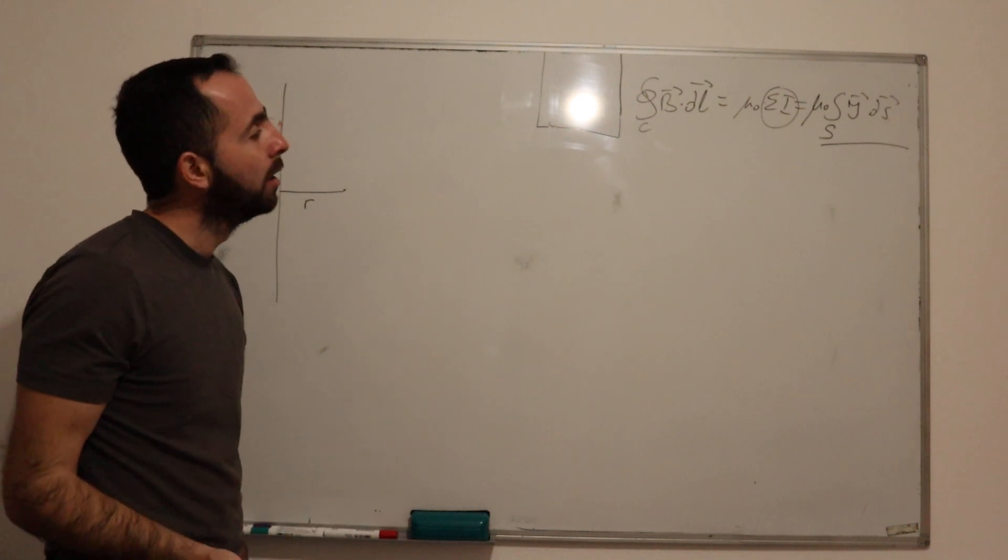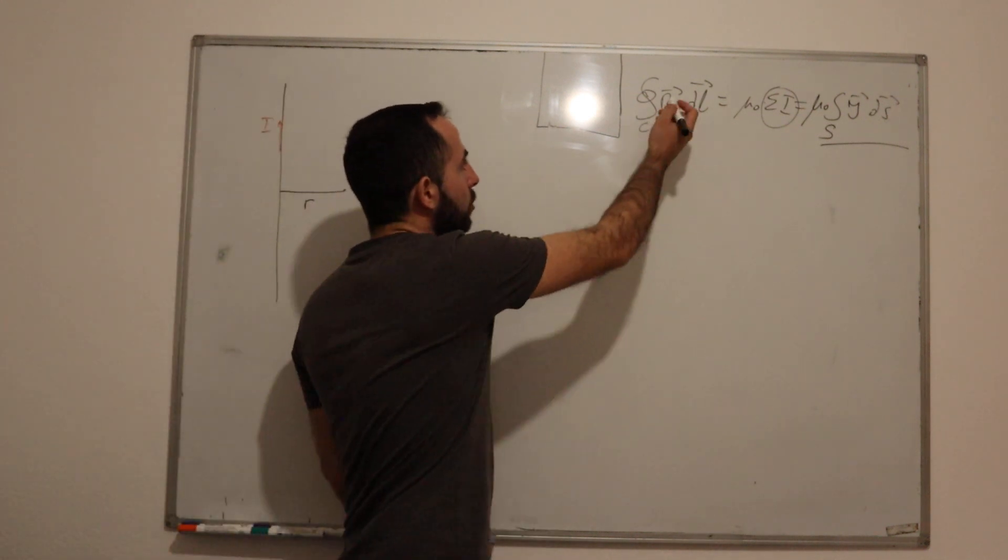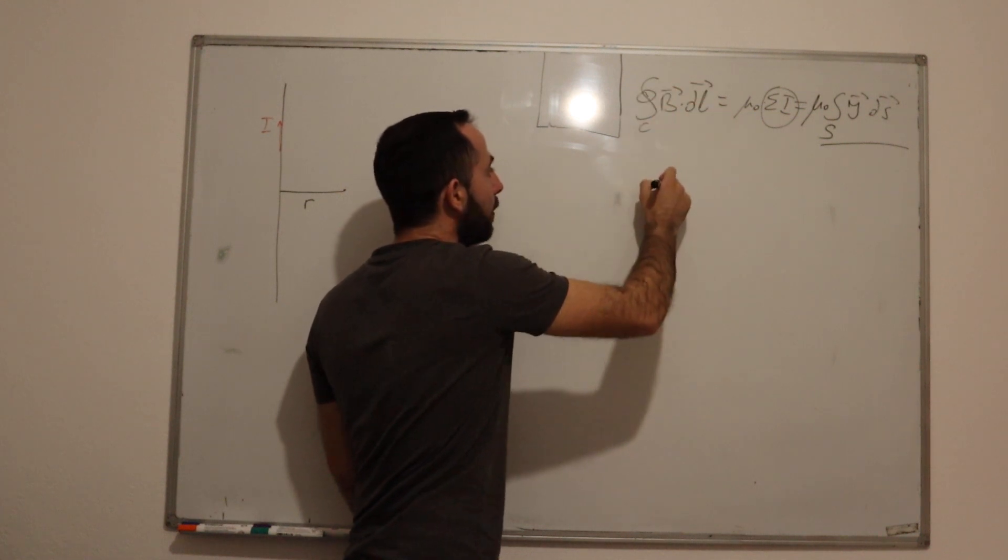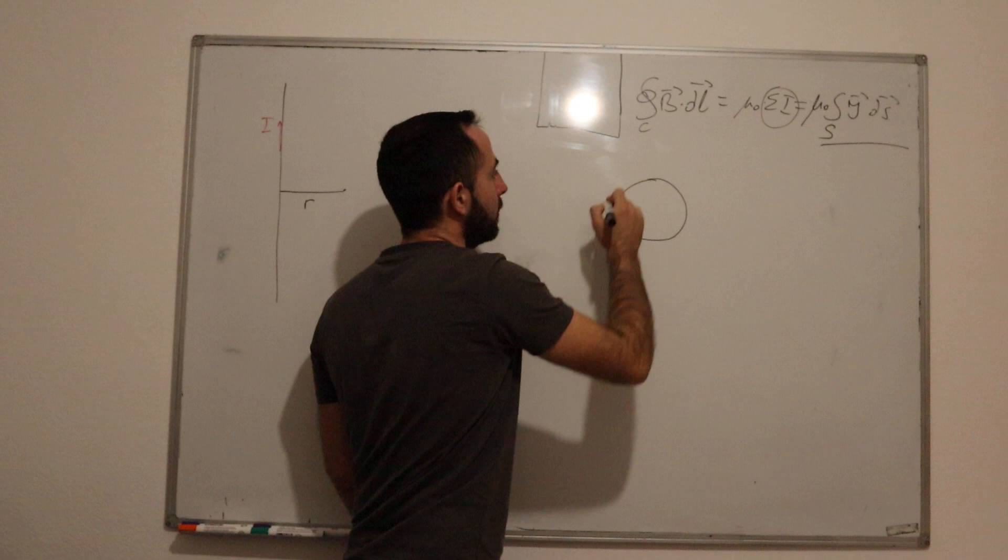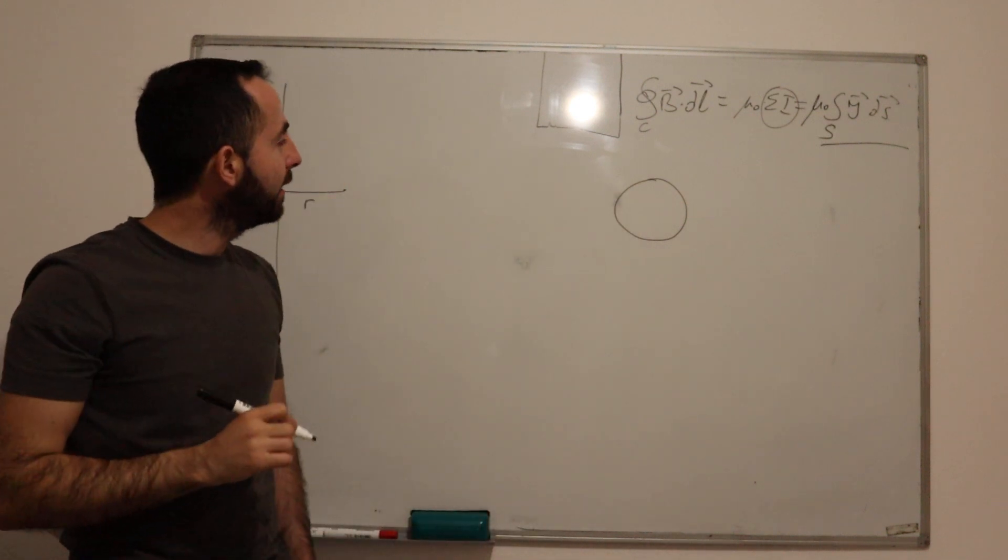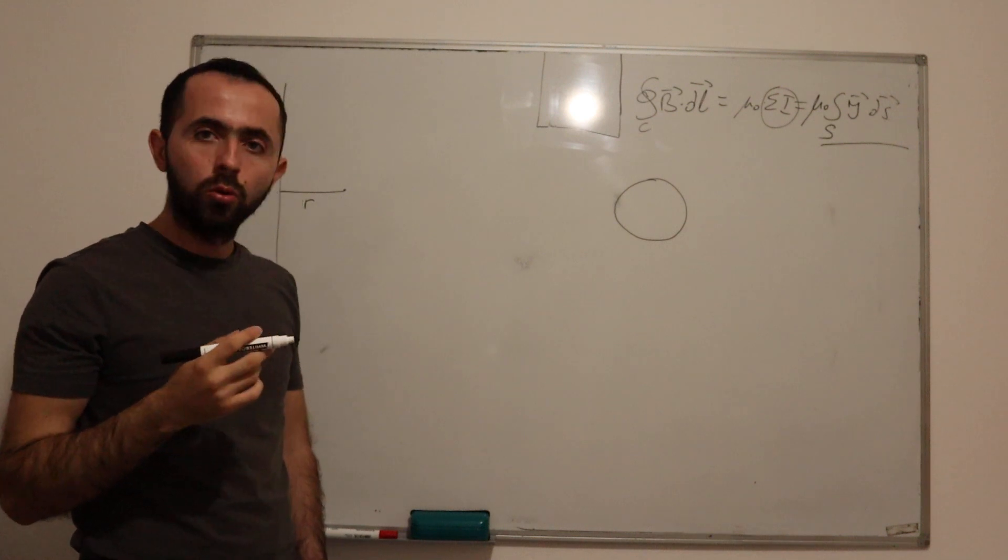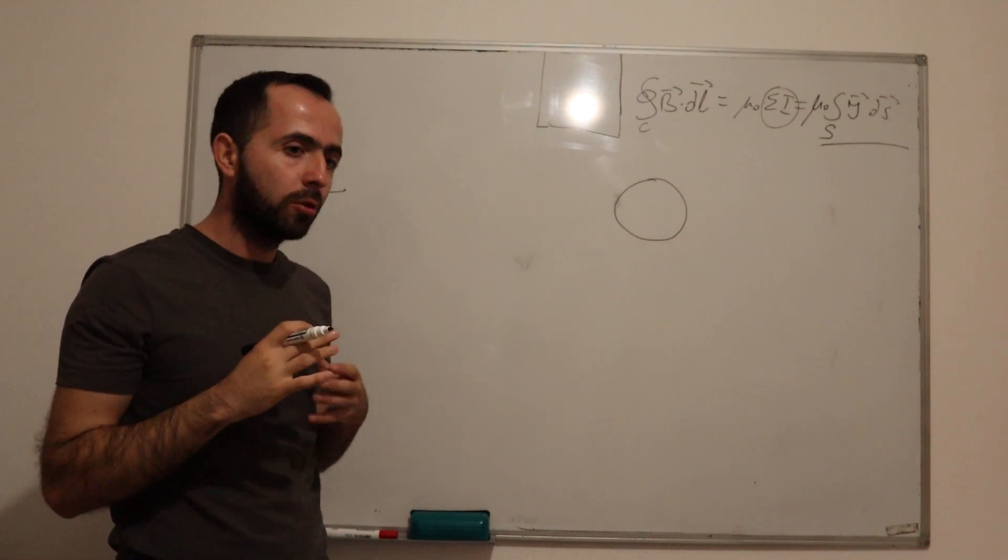What does this mean? It means if we want to, we can use this formula to calculate B over any closed circle, or any closed contour, so we can choose any type of closed contour we want.